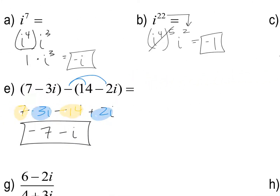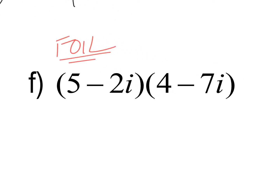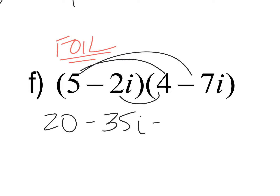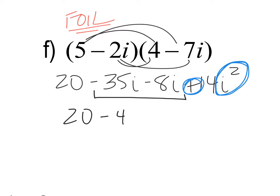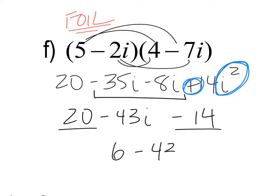For FOILing complex numbers like (5 − 2i)(4 − 7i): 5 times 4 is 20; 5 times negative 7i is negative 35i; negative 2i times 4 is negative 8i; negative 2i times negative 7i is positive 14i squared. Since i squared equals negative 1, the 14i squared becomes negative 14. Combining: 20 minus 14 is 6, and negative 35i minus 8i is negative 43i. The answer is 6 minus 43i.